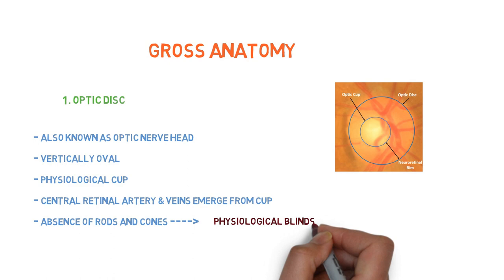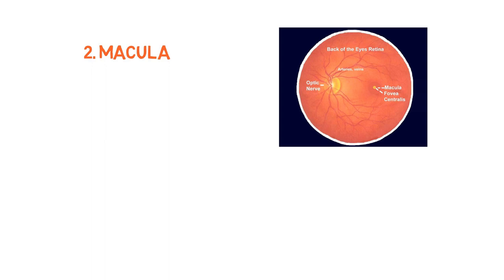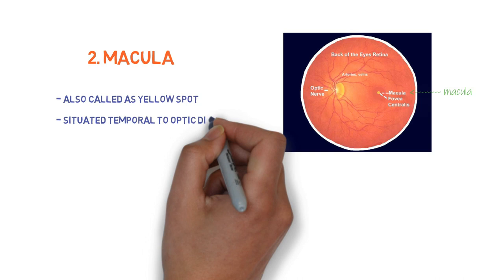Let's talk about the macula, also called the yellow spot. It is situated at the posterior pole, temporal to the optic disc. It contains the fovea centralis.